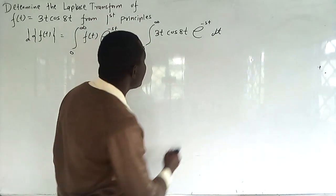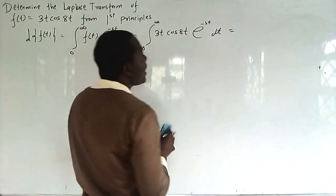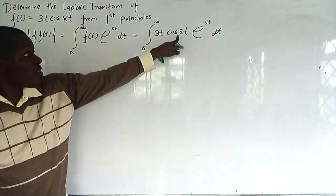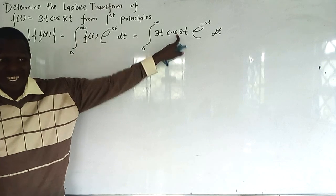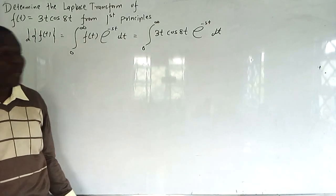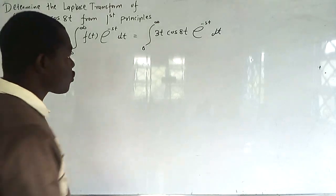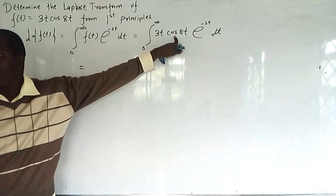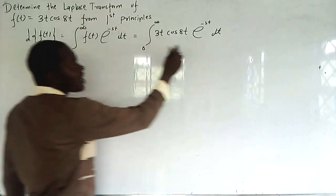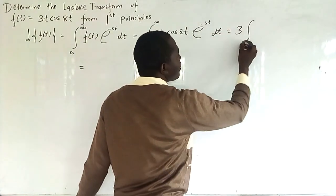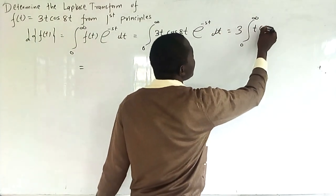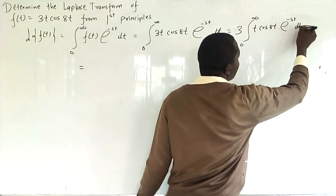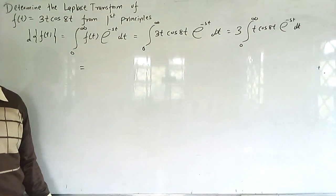Then we start the business of the day. The first thing we do is eliminate cosh — we get rid of the cosine hyperbolic. Since 3 is a constant, we factor it outside: we have 3 times the integral from 0 to infinity of t·cosh(t)·e^(-st) dt.